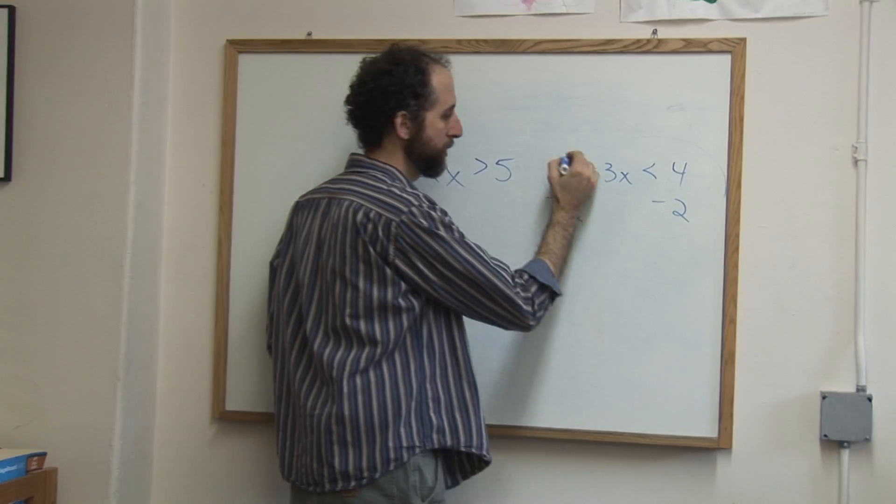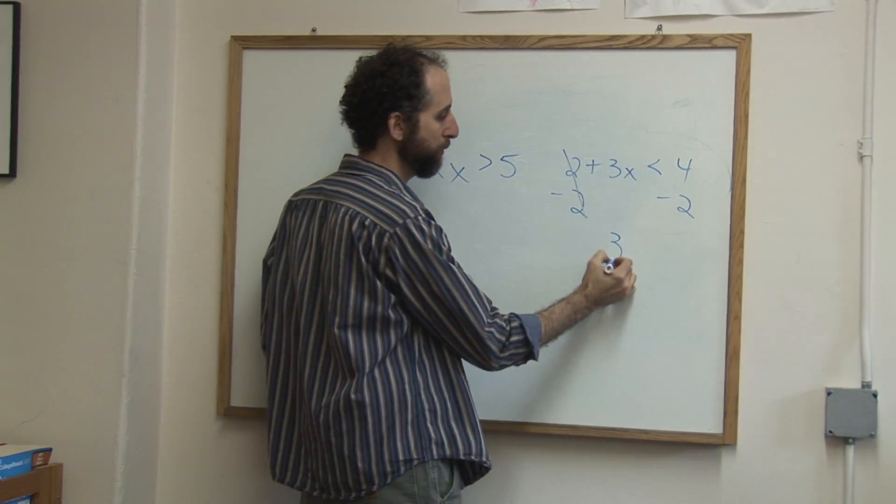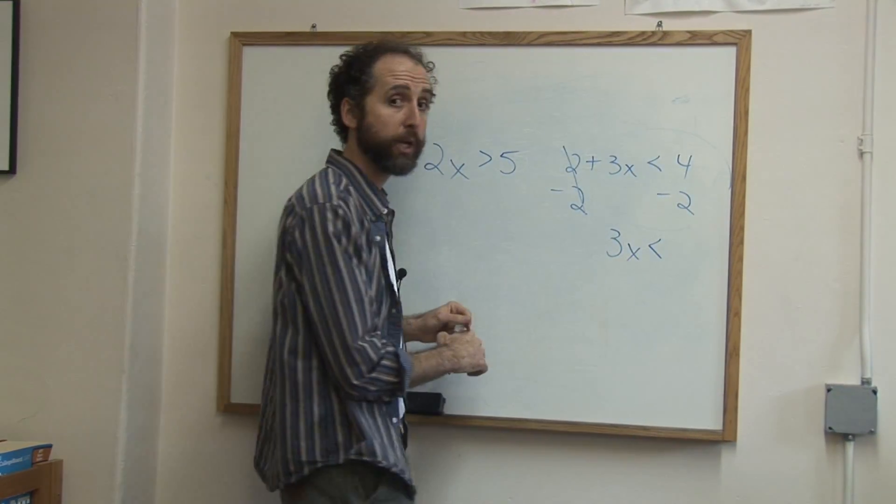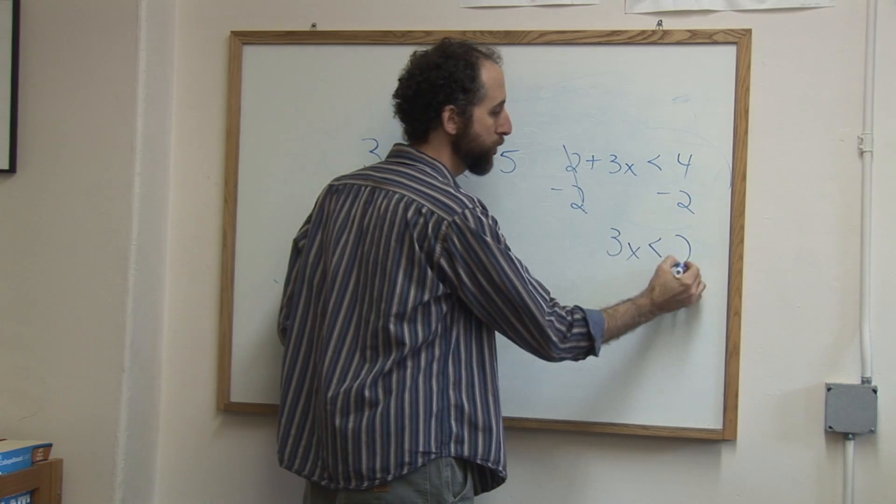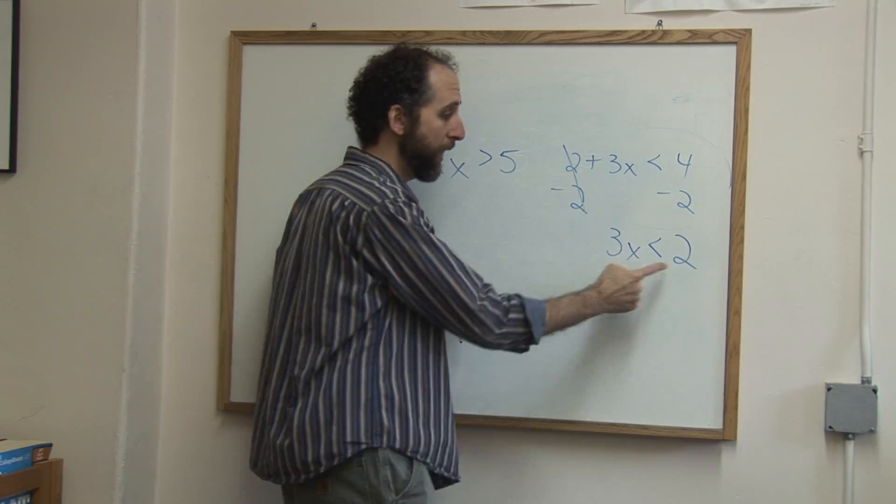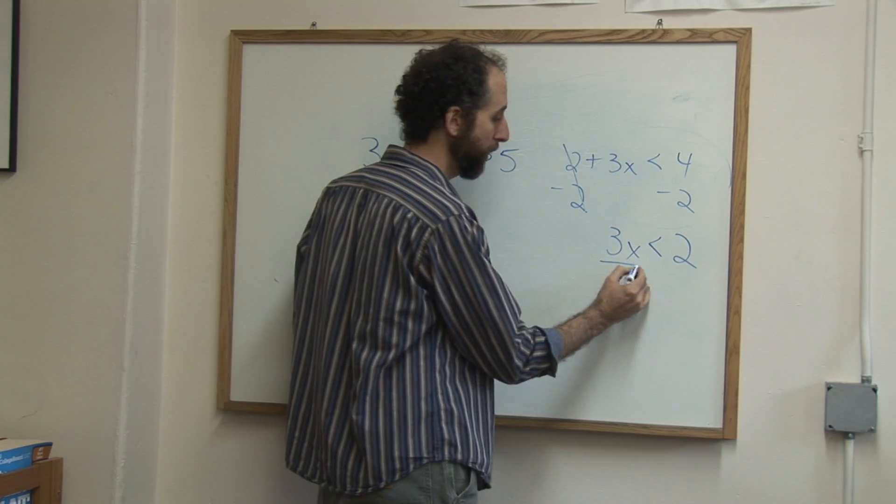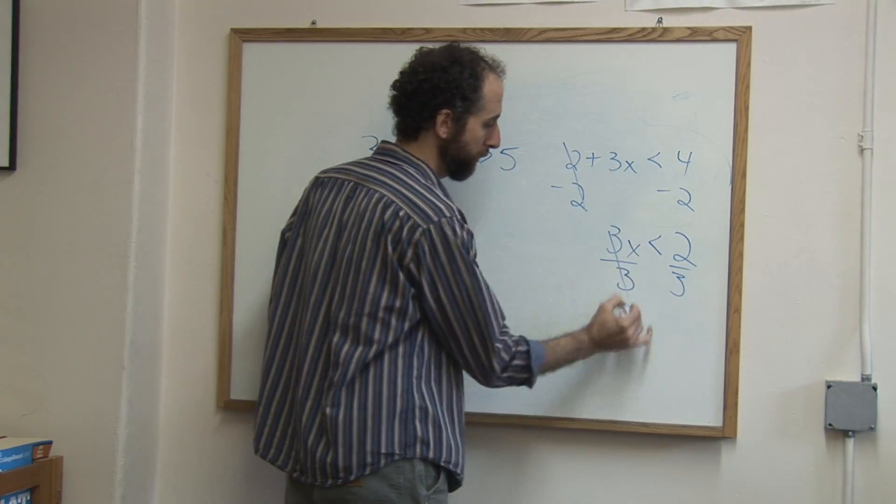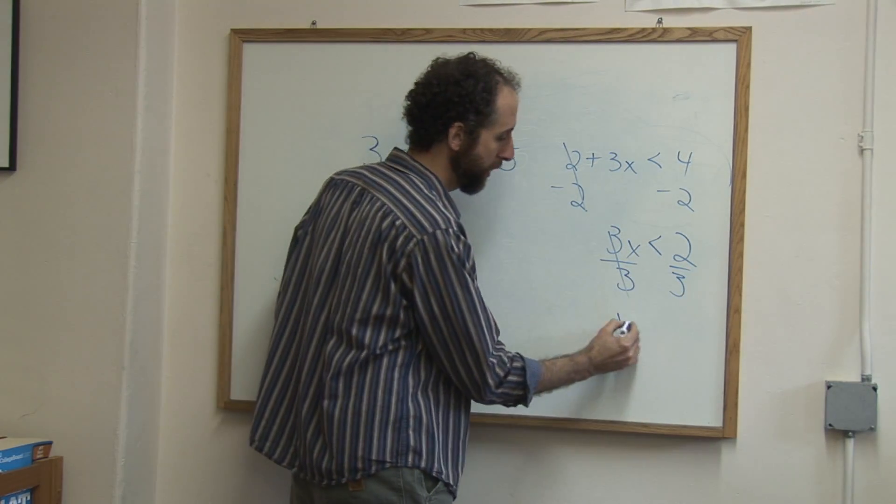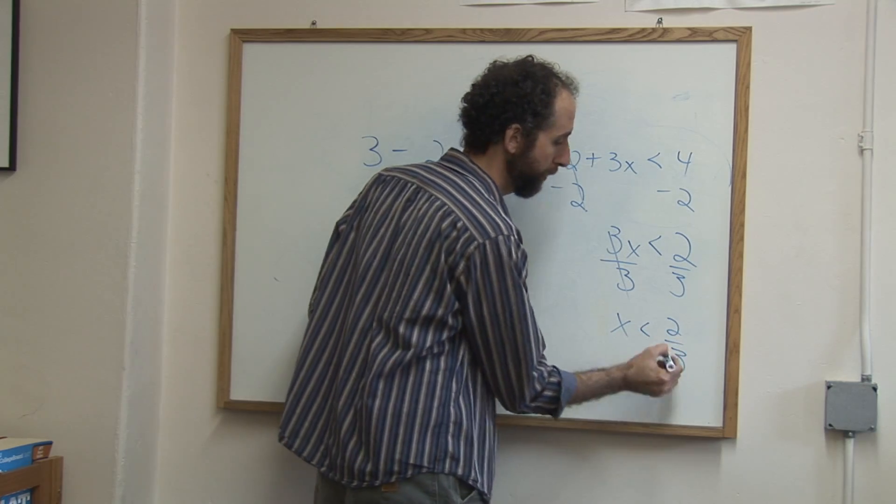We're going to subtract 2 from both sides. 2 minus 2 cancels leaving me 3x is less than, you just copy the sign, 4 minus 2 is 2. Now you divide, this is where this comes in, you divide both sides by 3. 3 over 3 cancels, x is less than 2 thirds. There's your answer.